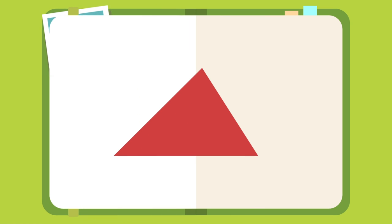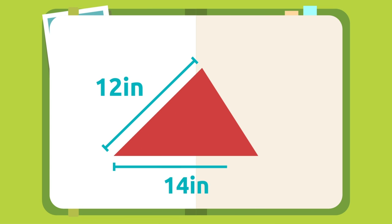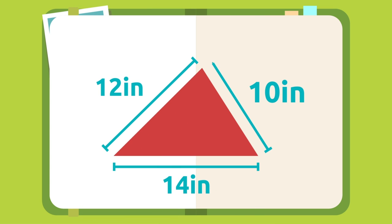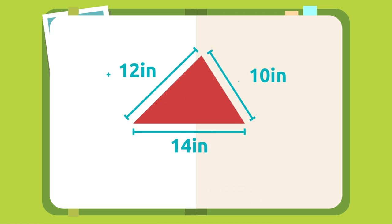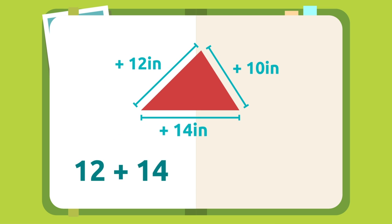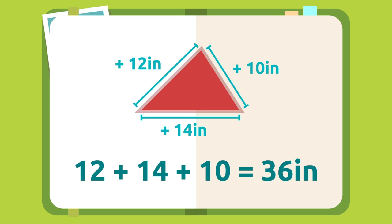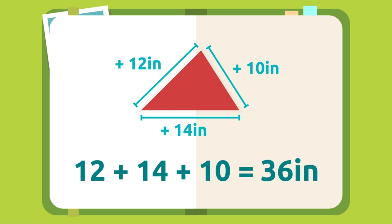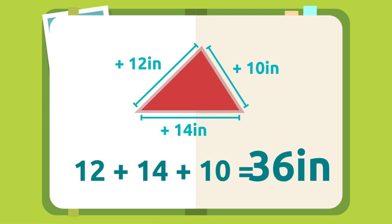Let's look at an example. This triangle has three sides that measure 12, 14, and 10. To find its perimeter we add 12 plus 14 plus 10, which equals 36 inches. This triangle has a perimeter of 36 inches.